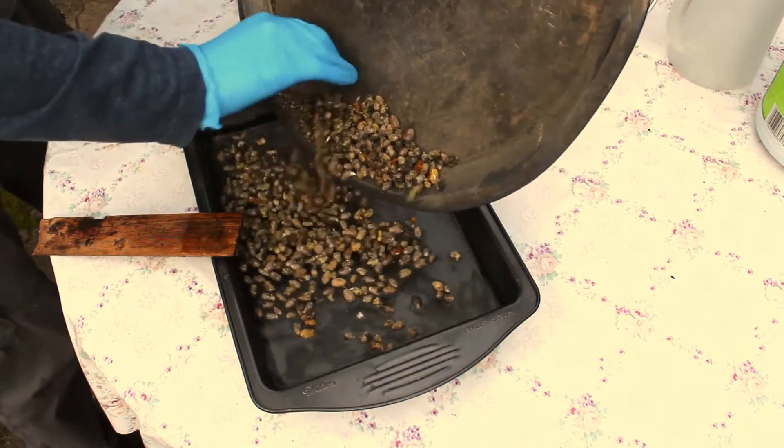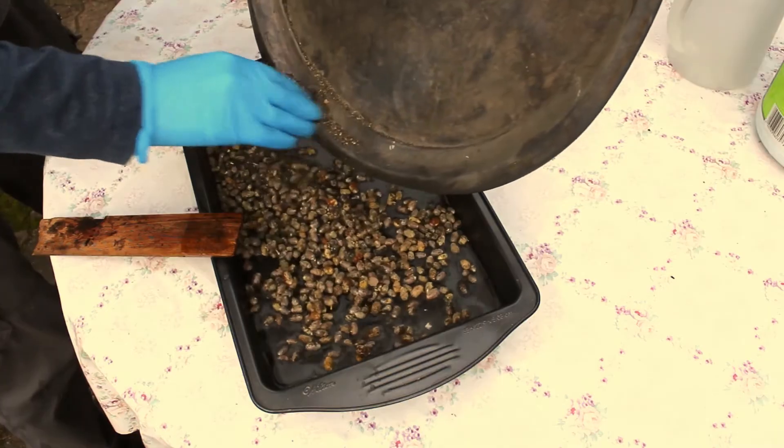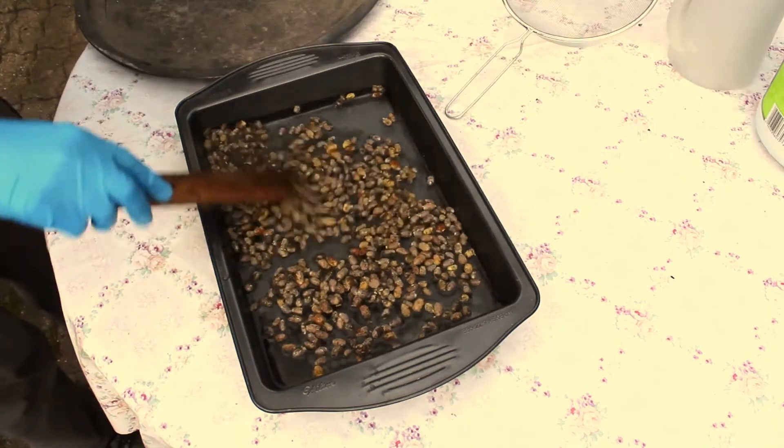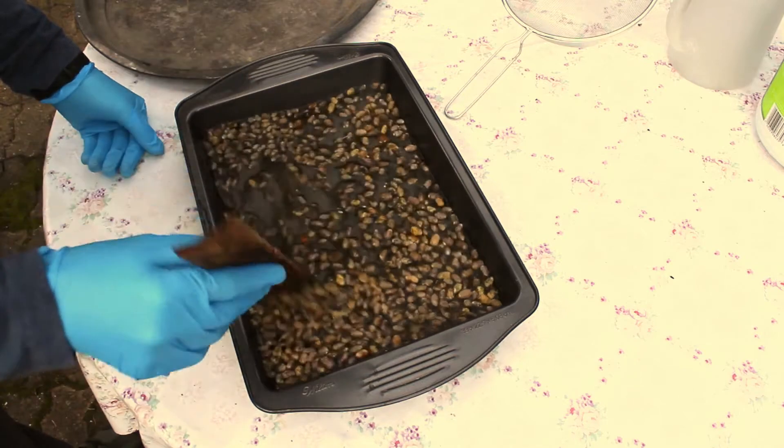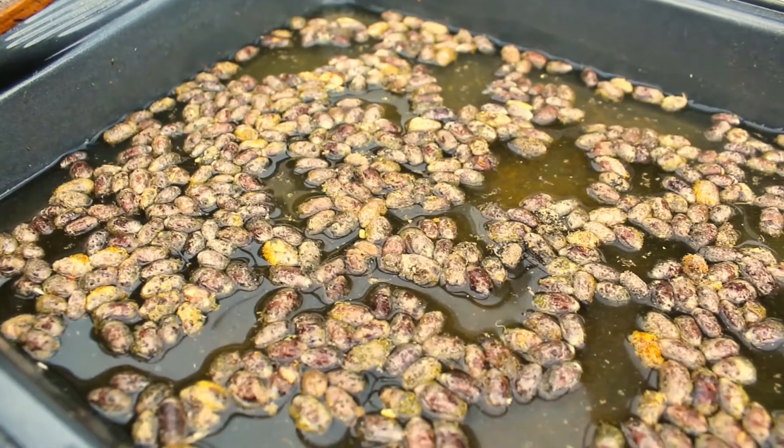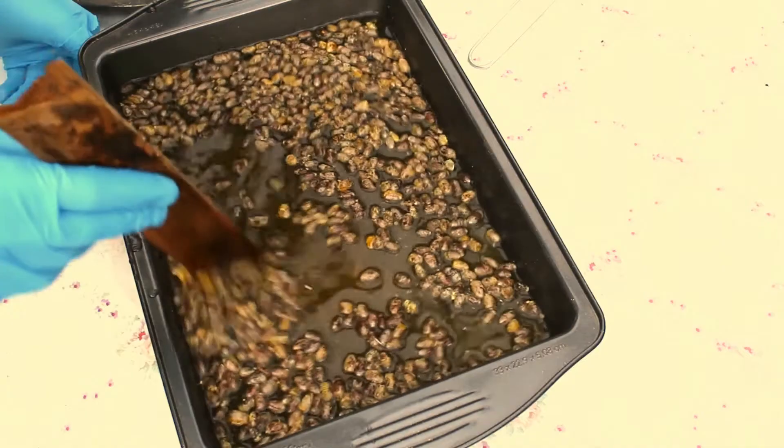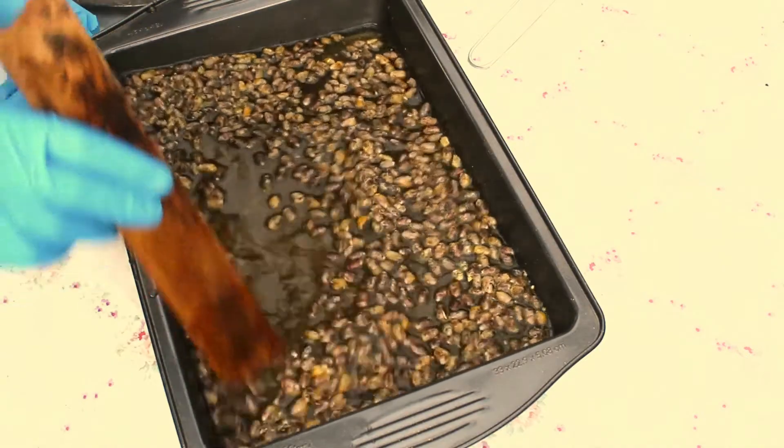After mixing the two, carefully add the cocoons. Using a stick, gently clean the cocoons by swirling them around the tray. All the leftover pollen, dirt, and fly maggots will be separated from the cocoons at this stage. It's important to be thorough and take time with this process.